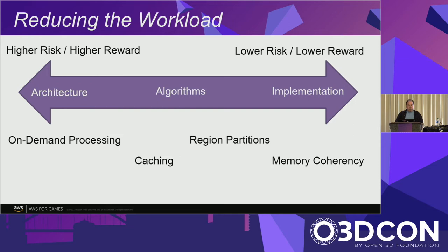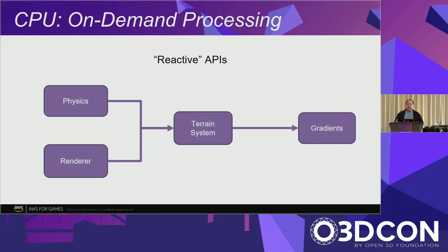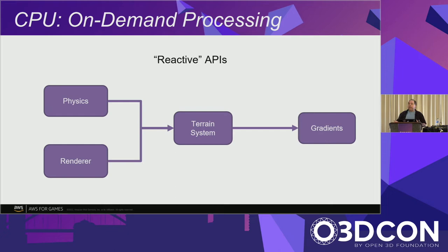Starting at the architectural level on the CPU side, one of the biggest choices we made is doing on-demand processing through reactive APIs. The terrain system and the underlying gradient system don't do anything unless used — if nothing queries them, they consume no resources. It's only when you add systems like physics and rendering that query the system that things get processed. The good side is that instead of finding optimizations that work holistically, we can push the optimization problem down to the physics and rendering levels individually.